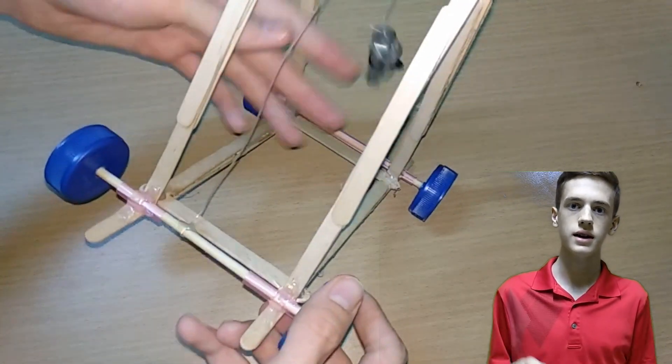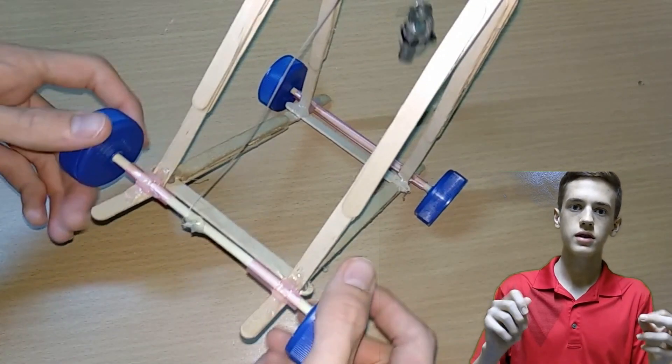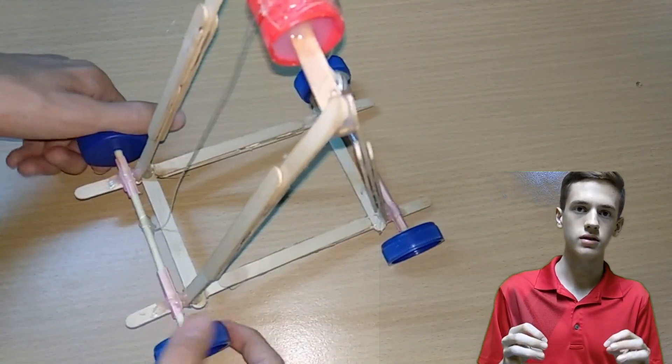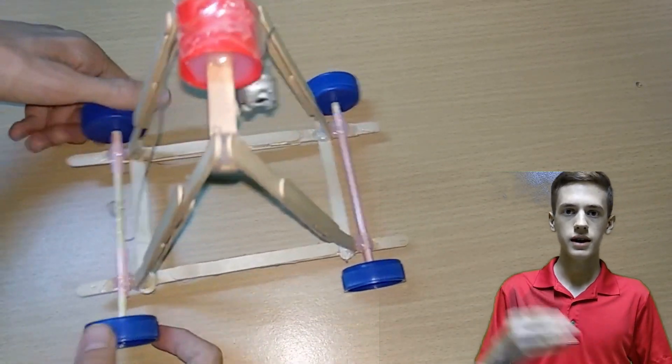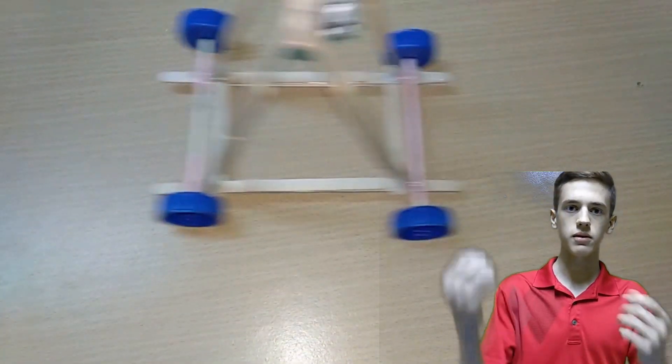Now when you spin the back tires, it will wrap the string around the back axle and lift the weight up. And when you set it up, you can let it go. And as the weight falls back down, it will unwind the wire and move the car forwards.